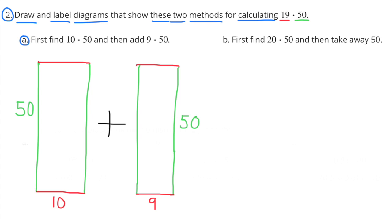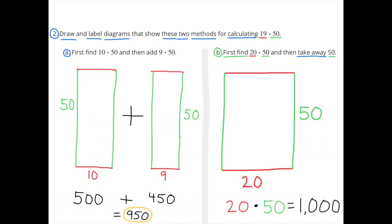Number 2. Draw and label diagrams that show these two methods for calculating 19 times 50. Method A: first find 10 times 50 and then add 9 times 50. In my diagram, I have two rectangles — one rectangle is 10 by 50, and the other is 9 by 50. 10 times 50 is 500, 9 times 50 is 450, and 500 plus 450 is 950.